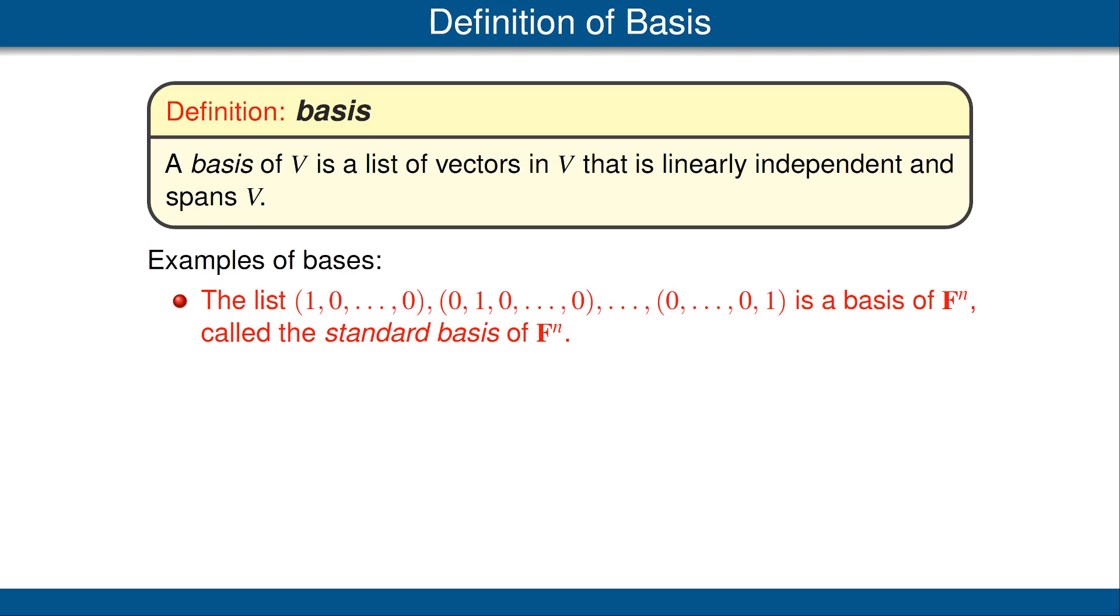Let's look at some examples of bases. We'll start off with F^n and then we have the list of n vectors, each one of them an element of F^n. The first vector is 1 followed by all 0s. The second vector is 0, 1, then all 0s, and so on up until the last vector, which is n-1 zeros followed by 1. This is the basis of F^n, as is easy to verify. Be sure you think about it. This is called the standard basis of F^n.